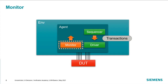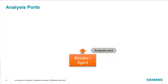In our agent, we've already talked about how the sequencer sends transactions to the driver, which then converts those into pin wiggles on the DUT. The monitor's job is to actually look at those pin wiggles, recognize the activity, and assemble transaction objects from that, and pass that up into the verification environment for further analysis.